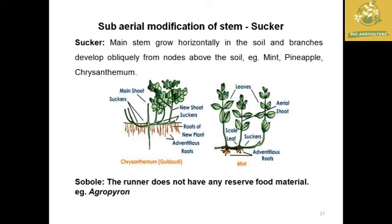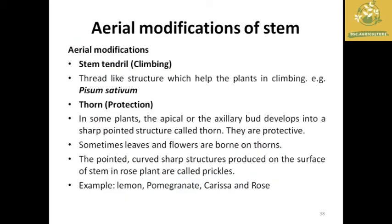Suckers: the main stem grows horizontally in the soil and branches develop from different nodes above the soil to form new plants; examples: mint, pineapple, and chrysanthemum. These differ from runners in that they do not store reserve food material.